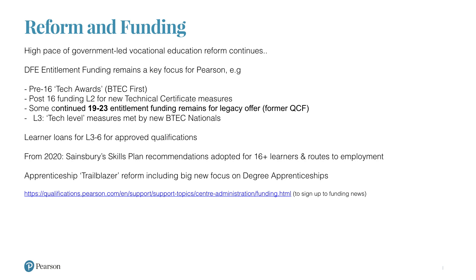There is a link in the slides with more detailed information on funding, what's available, and what the different lists are — and you will receive these slides afterwards. Certain centres may have flexibility to put together a study programme with the English and maths requirement and the main qualification adding up to 540 hours. But for most organisations with full-time learners, they'll want to choose qualifications on one or more of those lists.